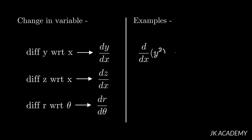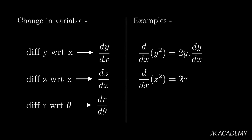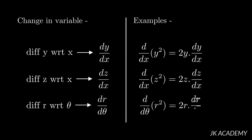When we look at y squared, we think of it like x squared — differentiation of x squared is 2x, so for y squared the answer is 2y, and then we multiply by the differentiation of y with respect to x, which is dy by dx. Similarly, d by dx of z squared gives 2z times dz by dx. And d by dx of r squared gives 2r times dr by d theta.